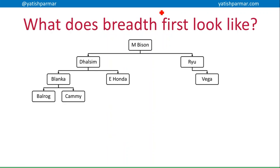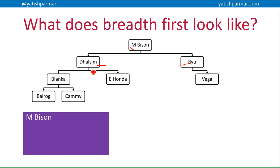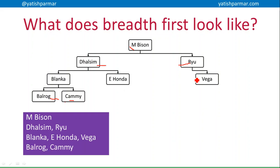Breadth-first traversal is about layers. We're going to start off at node N, being M-Bison. We add M-Bison to the queue, output M-Bison, and look at M-Bison's children. They've been added to the queue because we added Dalsim first. Basically, we're going to visit Dalsim's children first — Blanca and E-Honda — and then we visit Ryu's children, Vega. Then we visit Balrog's children, and then check if E-Honda has any children. No, he doesn't. Does Vega have any children? No. So we're going through the layers of the tree one at a time. It's all to do with the order in which we enqueue the data, so if we enqueue child nodes in a different order, then the breadth-first traversal output would actually be different.